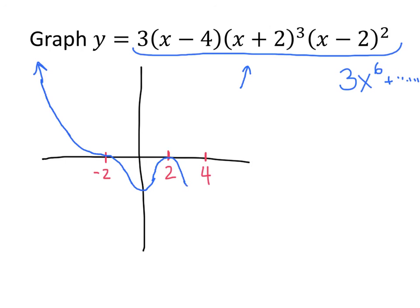The graph turns around again to hit the x-axis at x equals 4 and then meets up with the end behavior found earlier. So that is a very rough sketch of what this polynomial looks like. The root at negative 2 had multiplicity 3, so the graph flattened out and crossed. The root at positive 2 had multiplicity 2, so the graph flattened out and turned back around. And the root at positive 4 had multiplicity 1, so the graph crossed straight through.